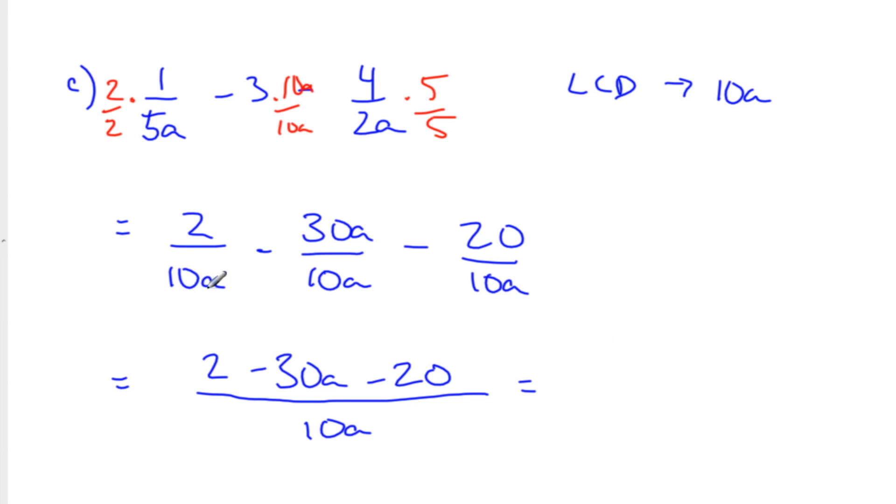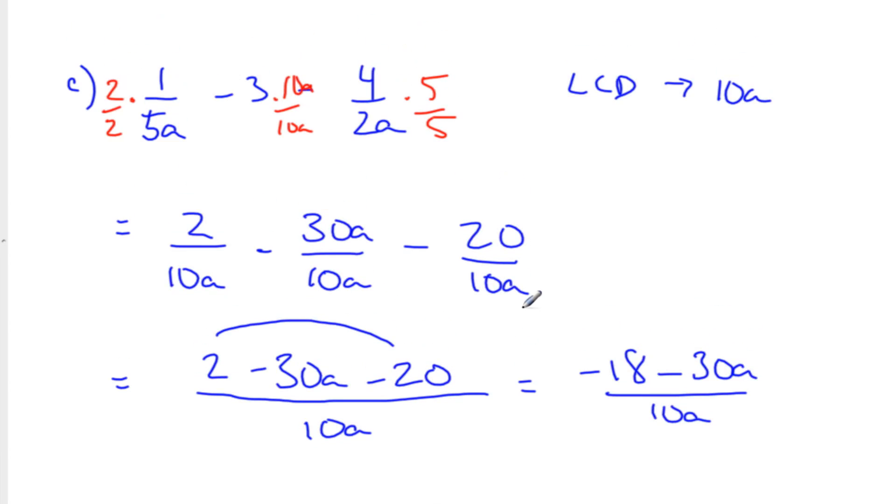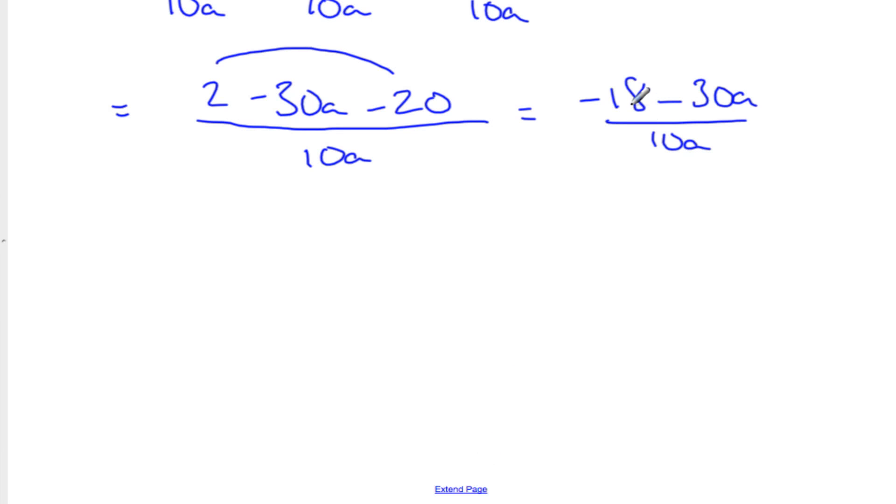Okay. So we can put together the ones that are just numbers. So 2 minus 20 is negative 18. And we've still got minus 30a's. Over 10a. Okay. Okay. Can we do a bit of simplifying here? We can do some simplifying. So if you notice, these are all even. And so one of the things I can do from this top factor here is I can pull out a 2. And when I do that, I get negative 9 minus 15a over 10a.